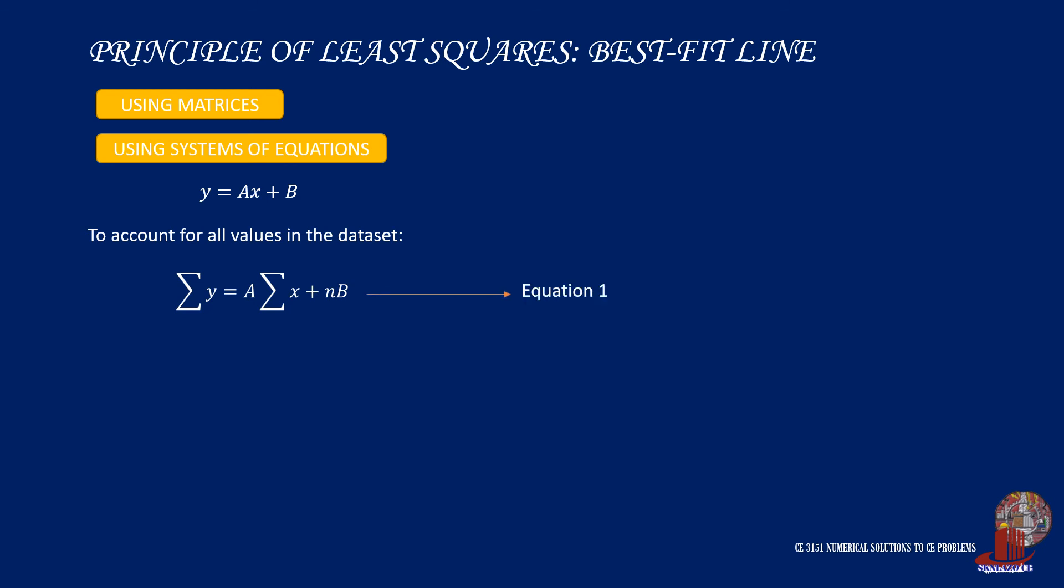This is considered to be equation 1. Then multiply the equation with the summation of x, which will then give the summation of x times y is equal to a times the summation of x squared plus b times the summation of x. This is equation 2. Now we have two equations for two unknowns.